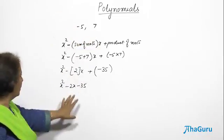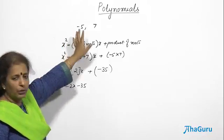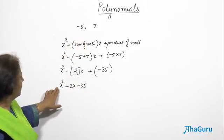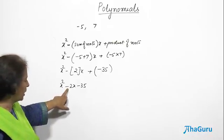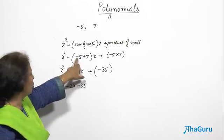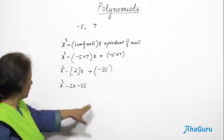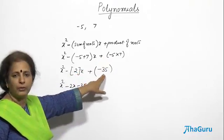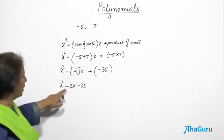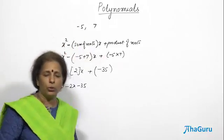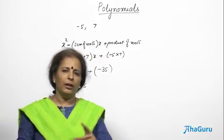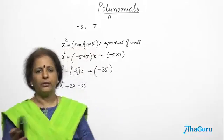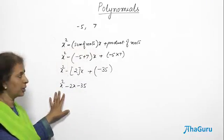Let us verify the answer. Minus B by A is the sum of roots — minus of minus 2 divided by 1, which is 2, and that equals minus 5 plus 7, which is 2. Similarly, C by A gives minus 35, which is the product of the roots. So from the polynomial we get back the roots. If we know the roots, we can write the polynomial; and if we know the polynomial, we can find the roots.